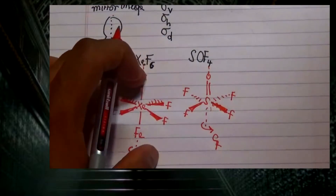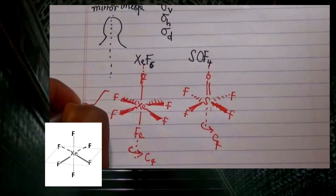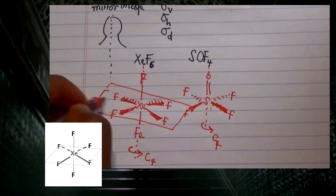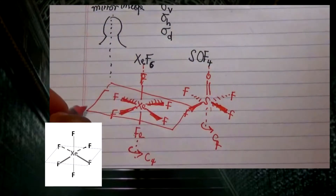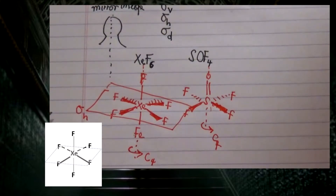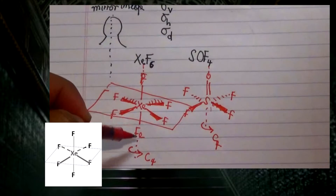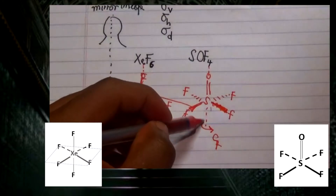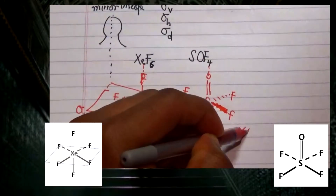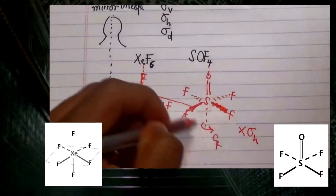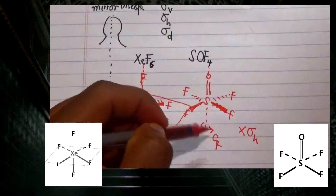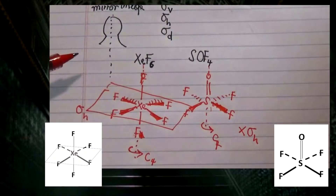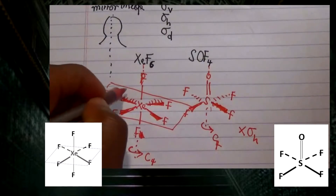One important difference is that xenon fluoride has a sigma h because the plane is perpendicular to the axis of rotation and passes through the equatorial fluorine atoms — the top is the same as the bottom since fluorine is present at both the top and bottom. However, sulfuryl fluoride has no sigma h because there is no mirror equivalence at the top and bottom due to the absence of an oxygen attached to the sulfur at the bottom.